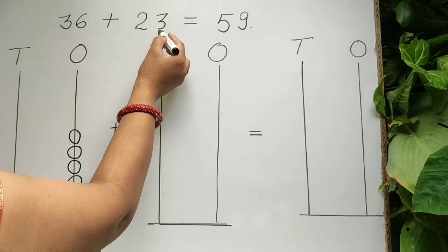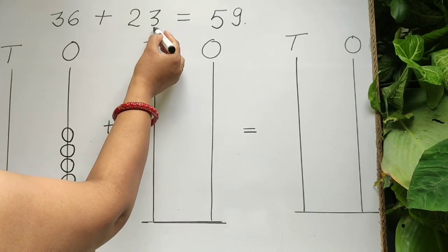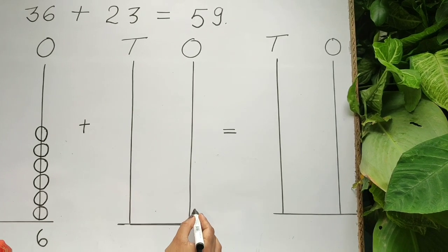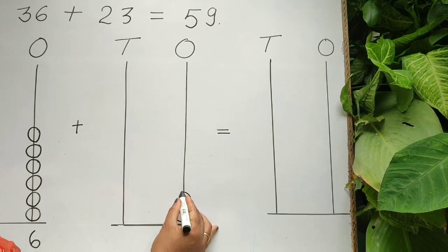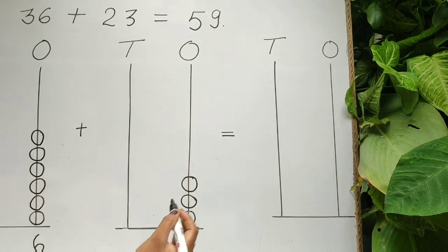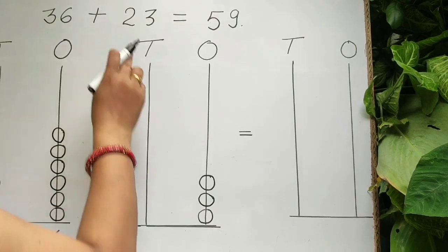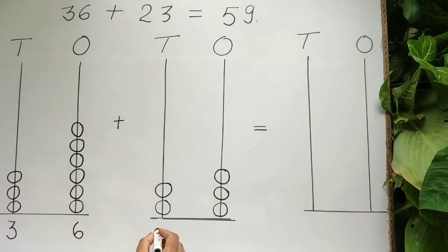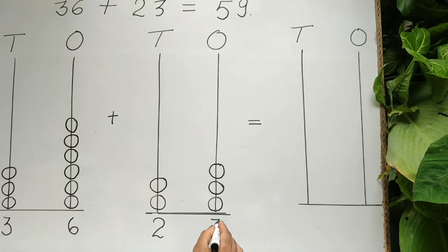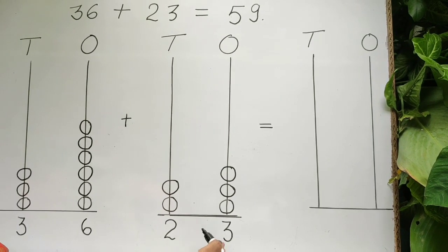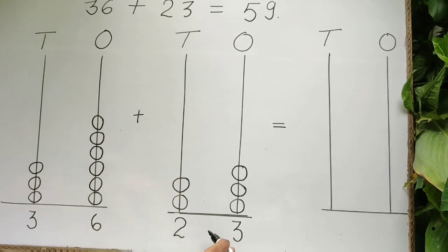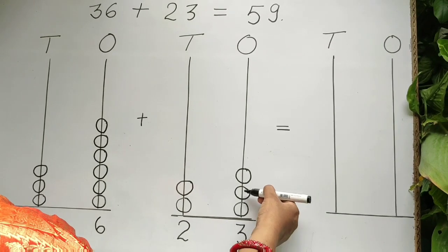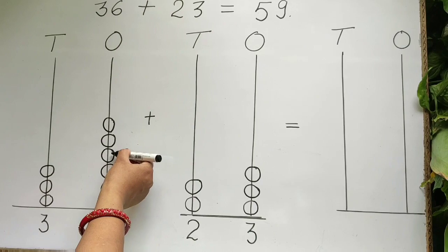Plus two tens, three ones is equal to 23. So we will make three beads on the ones rod — one, two, three. After that, two beads on the tens rod — one, two. Two tens, three ones is equal to 23.